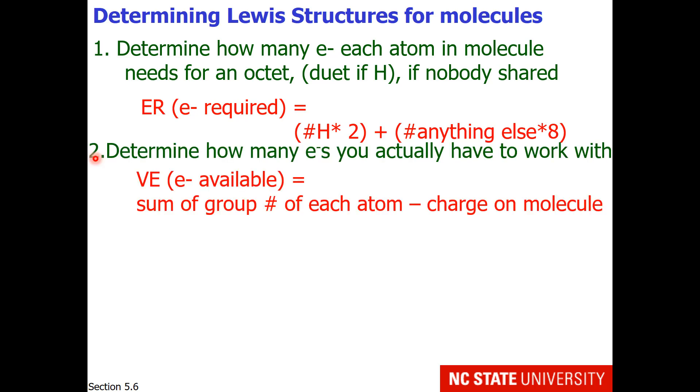The next step is to determine how many electrons do you actually have to work with. Electrons required is what we need if no sharing occurs. Valence electrons is how many electrons we actually have. This would be the sum of the group number of each atom minus the charge on the molecule.